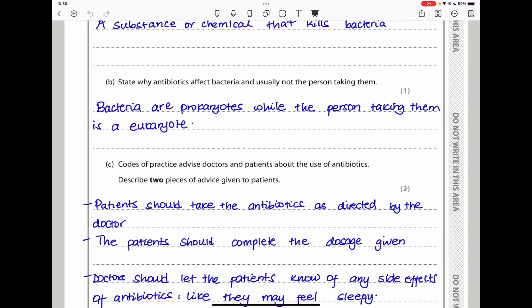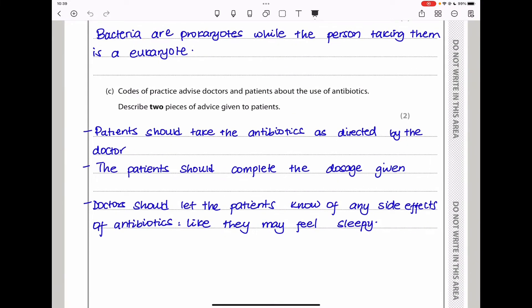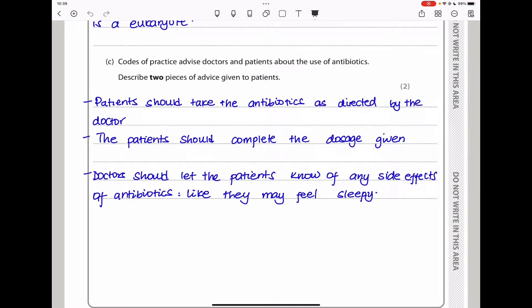The next part says, codes of practice advise doctors and patients about the use of antibiotics. Describe two pieces of advice given to patients. Patients are told to take the antibiotics as directed by the doctor. You have to follow the prescription given by the doctor. Another thing is the patient should complete the dosage. It means if you are supposed to take the antibiotics for three days, you have to ensure that you take them for three days. And lastly, the doctors should let the patients know if there are any side effects from using the antibiotics, like the idea of feeling sleepy.